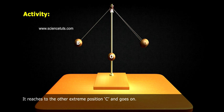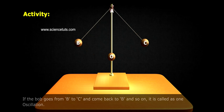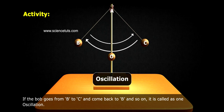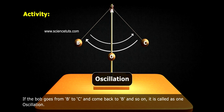It reaches to the other extreme position C and goes on. If the bob goes from B to C and comes back to B and so on, it is called one oscillation.